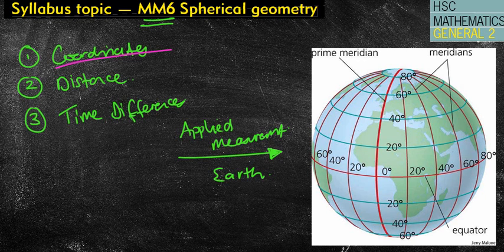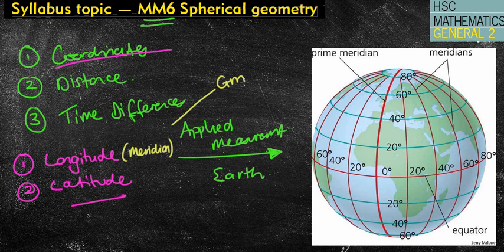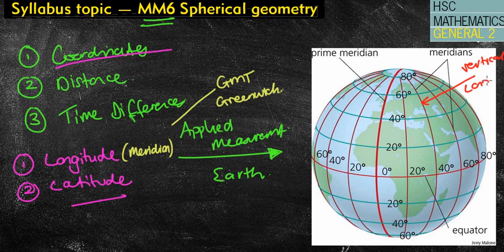The main things I want you to get out of today are the two words: longitude and latitude — you might remember these from geography. Lines of longitude are also called lines of meridian. You might have heard of GMT, which is the Greenwich meridian. Lines of longitude are the vertical lines on the globe.